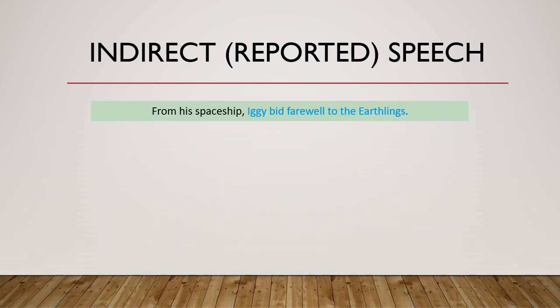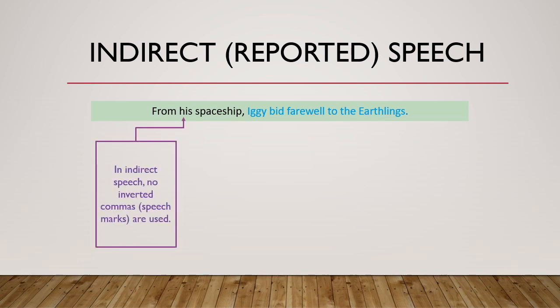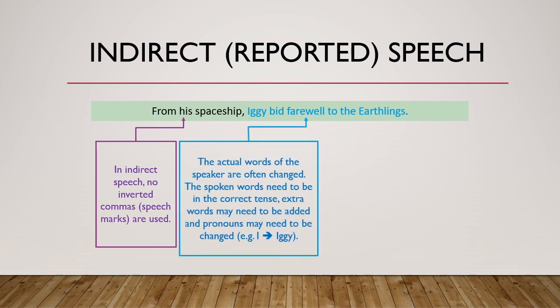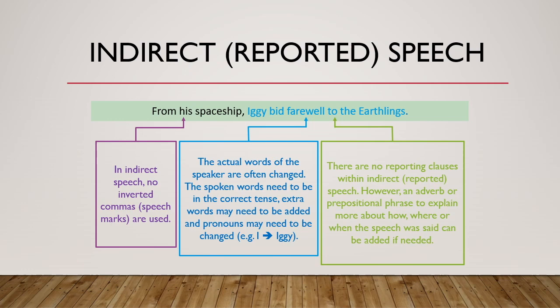Now we're looking at indirect or reported speech. We can see from the sentence below things have changed: From his spaceship, Iggy bid farewell to the Earthlings. In indirect speech, no inverted commas or speech marks are used. The actual words of the speaker are often changed — the spoken words may need to be put into the correct tense, extra words may need to be added, and pronouns may need to be changed. There is also no reporting clause within indirect or reported speech. However, an adverb or prepositional phrase to explain how, where, or when the speech was said can be added if needed.